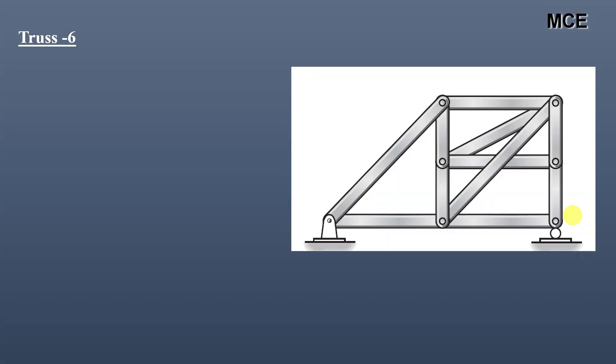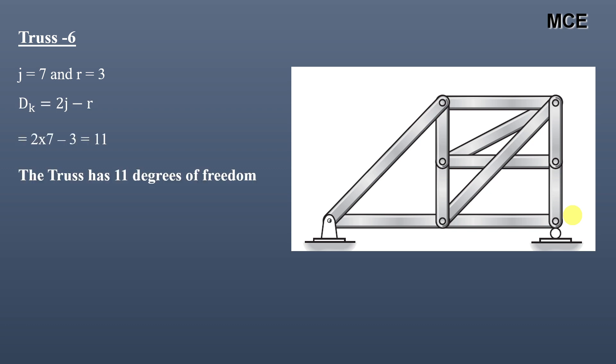For truss six, the total number of joints is seven and there are three support reactions. The value of dk for this truss is 11, meaning this truss has 11 degrees of freedom.